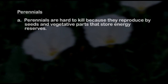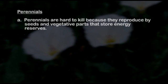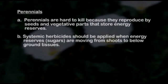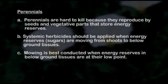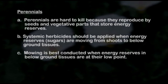In this segment we discussed the vegetative reproductive structures found in perennials and why that makes them so very difficult to control. We also talked about understanding the timing of carbohydrate or sugar movement in perennial weeds and how critical it is to the proper timing for management.